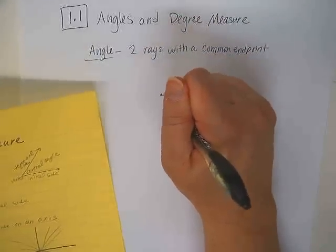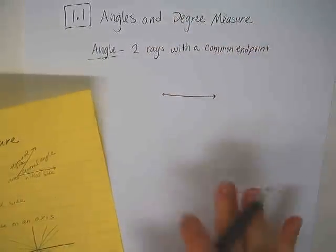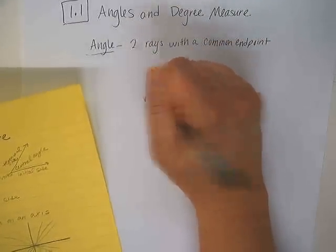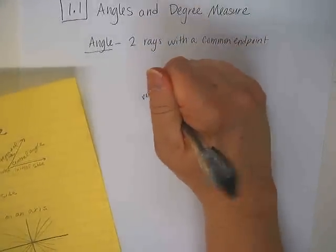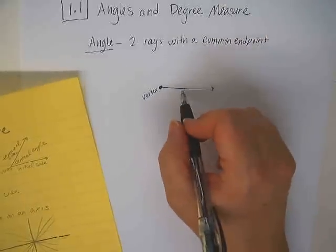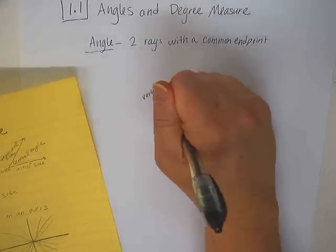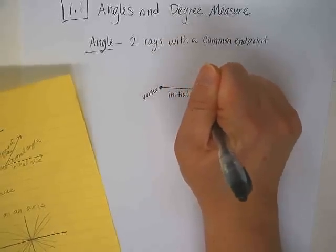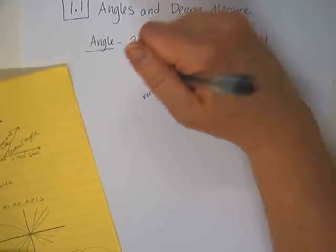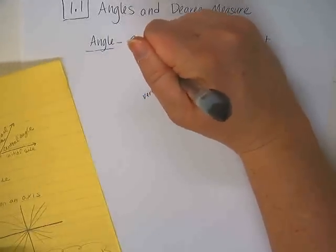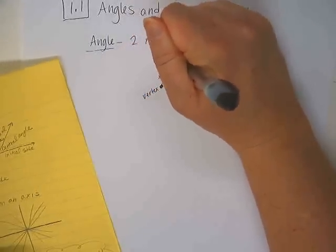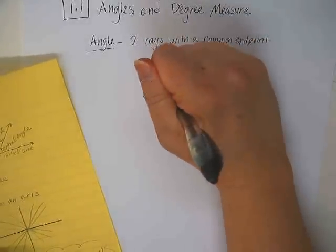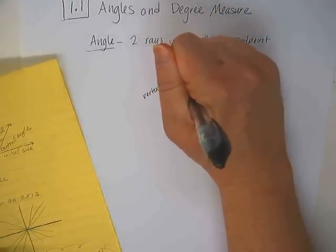Now we're going to add some vocabulary you may not have heard before. This common endpoint is called the vertex. The side where the angle starts is called the initial side, and the side where the angle ends is called the terminal side. The angle in between the two is called a central angle.